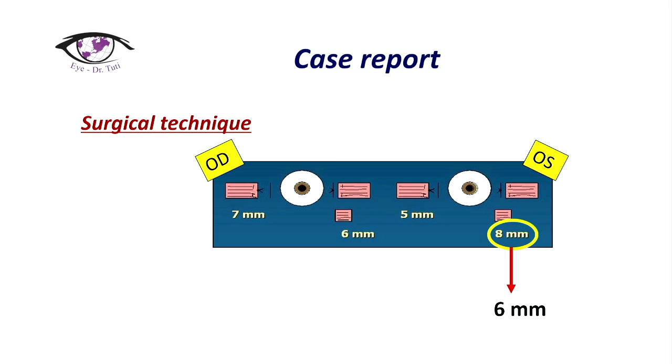As shown in this slide, Parks' classic numbers are 7-6-5-8, but these are not always used rigidly — many surgeons adjust the numbers depending on the case. In my case, since the patient had not only nystagmus but also strabismus and abnormal head deviation, I had to decrease nystagmus frequency by placing the head in the correct position while also correcting the strabismus.